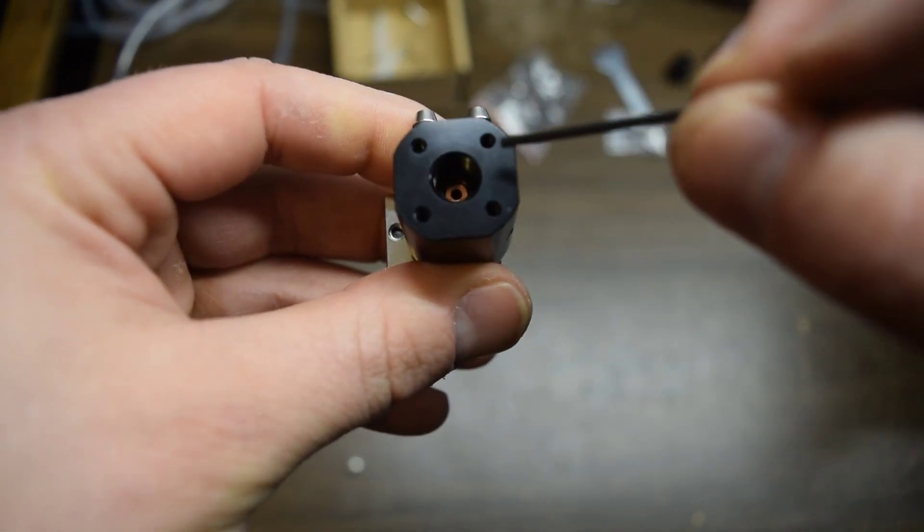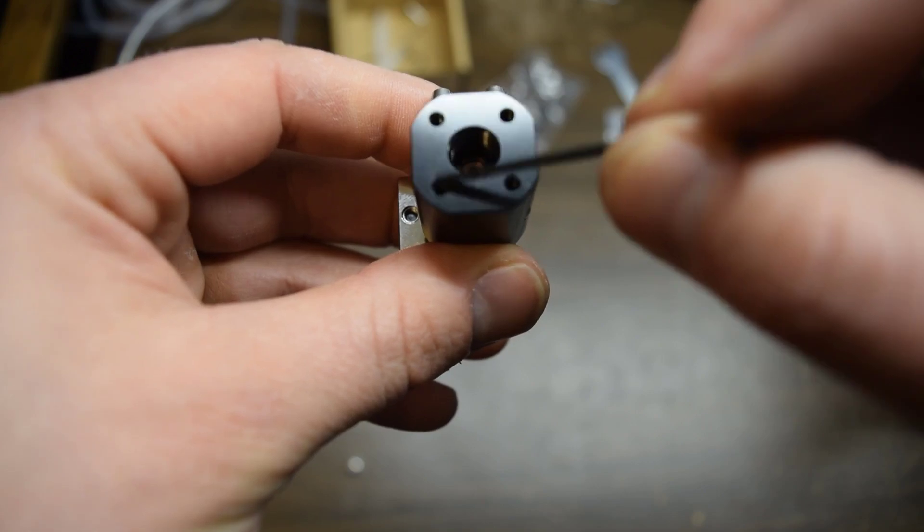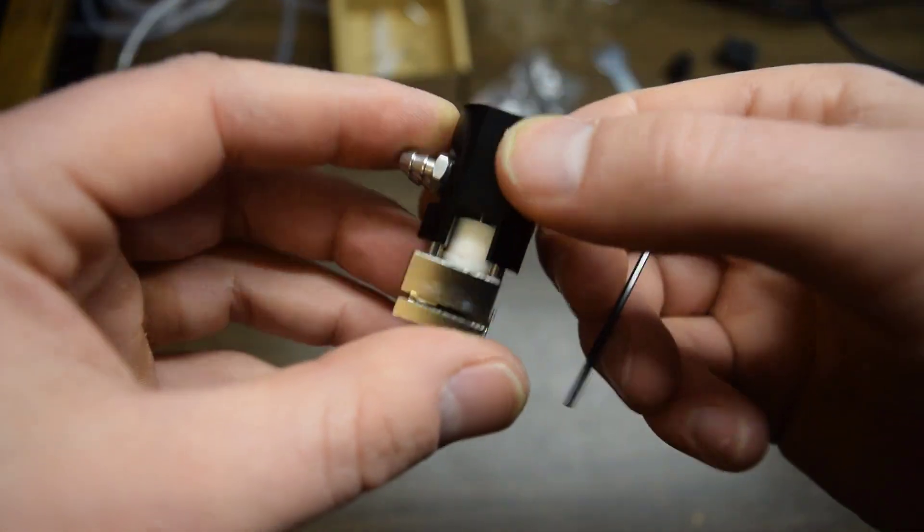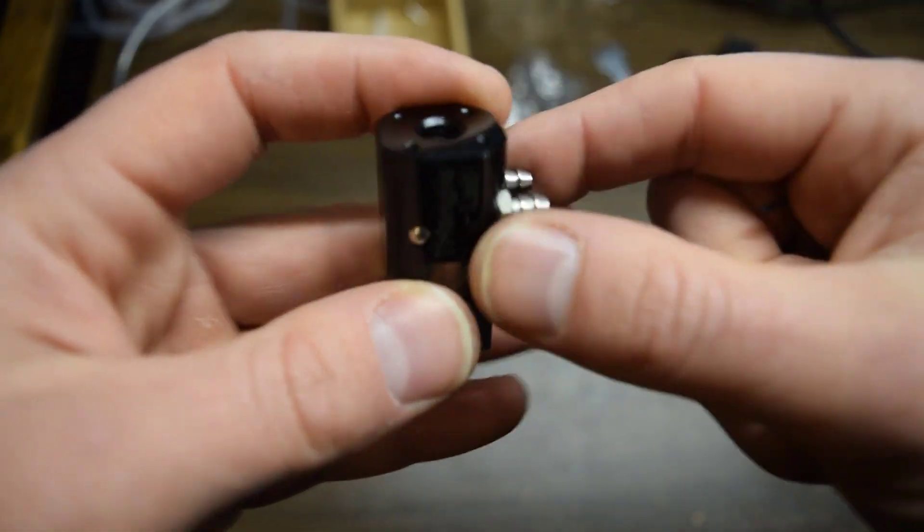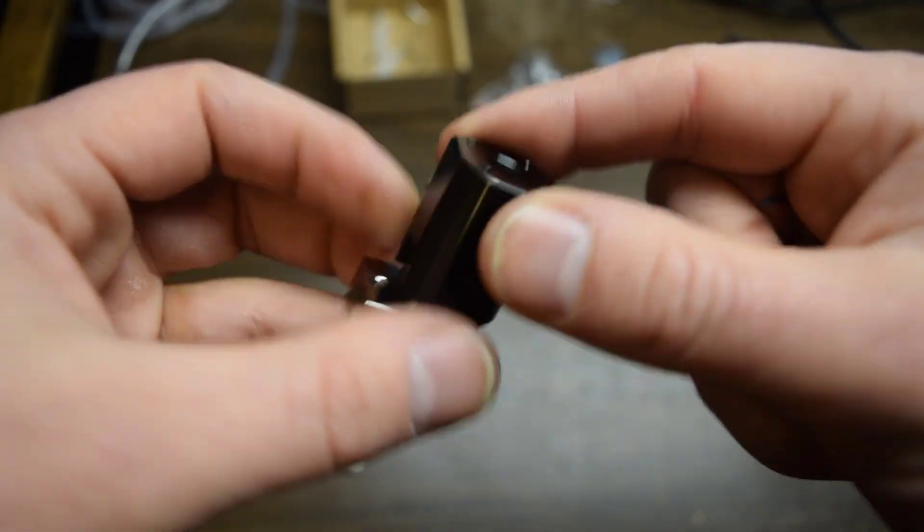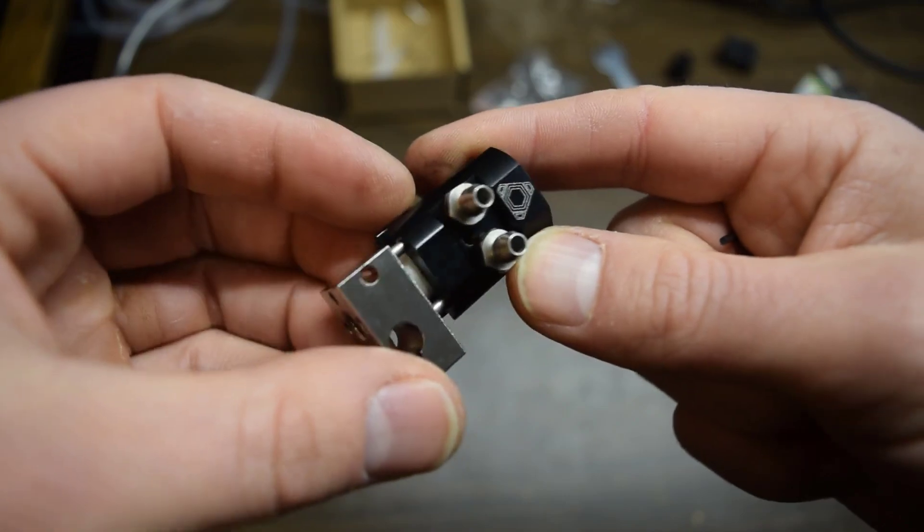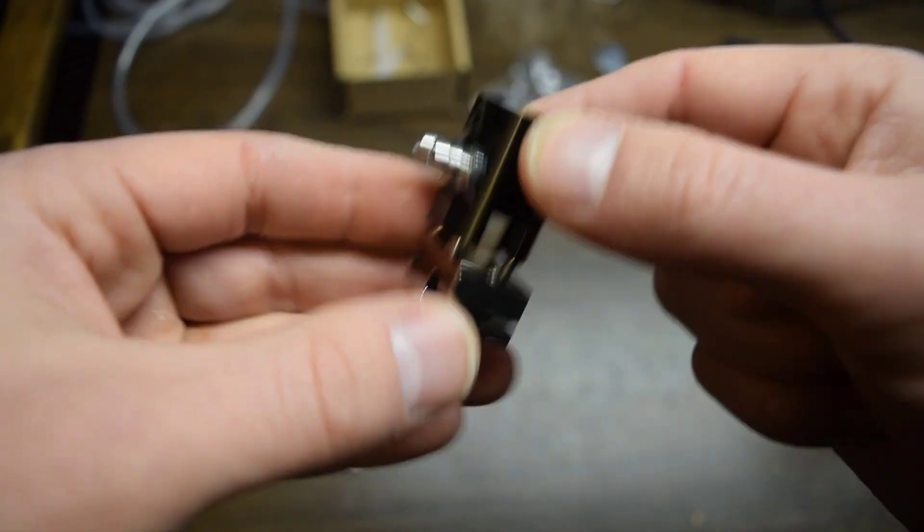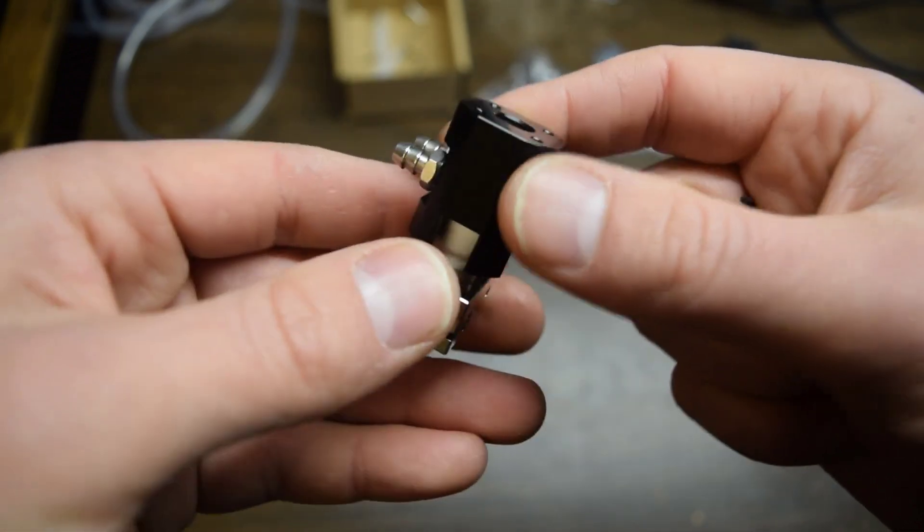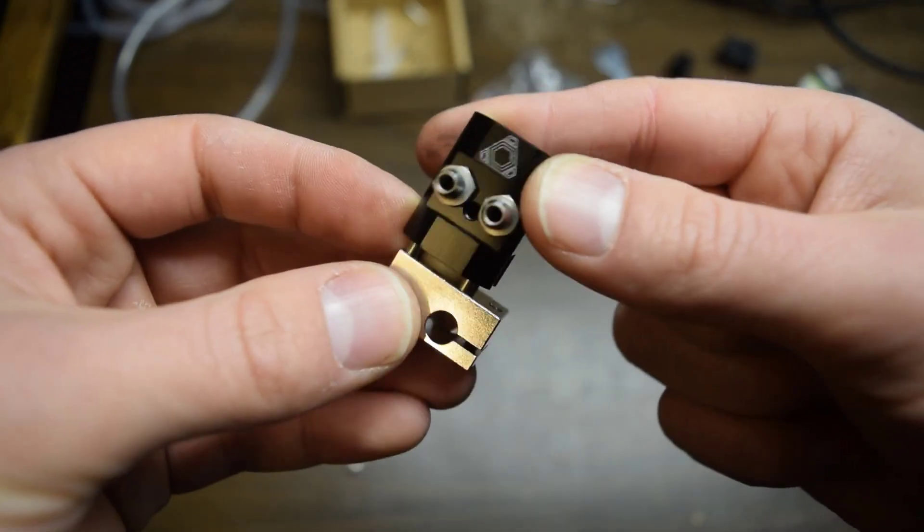What you actually have is just a simple U-shaped passage going through this. This black block here is almost solid aluminum, there's just a couple drill holes through it. It would be far more efficient if they had some sort of fin system in here, but maybe this is good enough. We'll find out once we actually go ahead and test this thing.